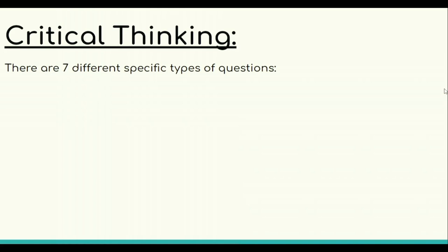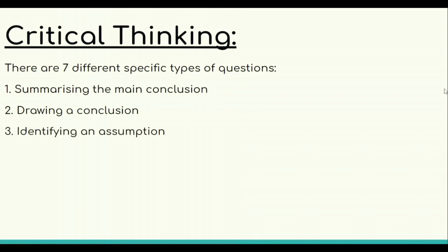All right, so there are effectively only seven different types of questions they can ask you in critical thinking, and we are going to be tackling the strategy for each one of them. Then we are going to be going through the same example questions, and I'll show you how to approach these questions. Anyway, let's talk about the seven question types: number one is summarizing the main conclusion, then we have drawing a conclusion, then comes identifying an assumption. The fourth question type is to assess the impact of additional evidence.